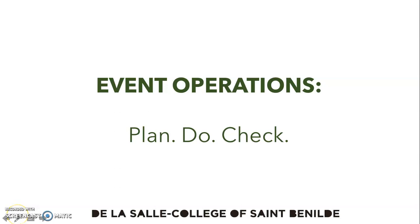Good morning, everyone. For today, we will be continuing our discussion on event operations. So if step zero is drawing the organizational structure and step one is planning, step two refers to the things that must be done after securing approval to stage the event. Step two is 'do.'